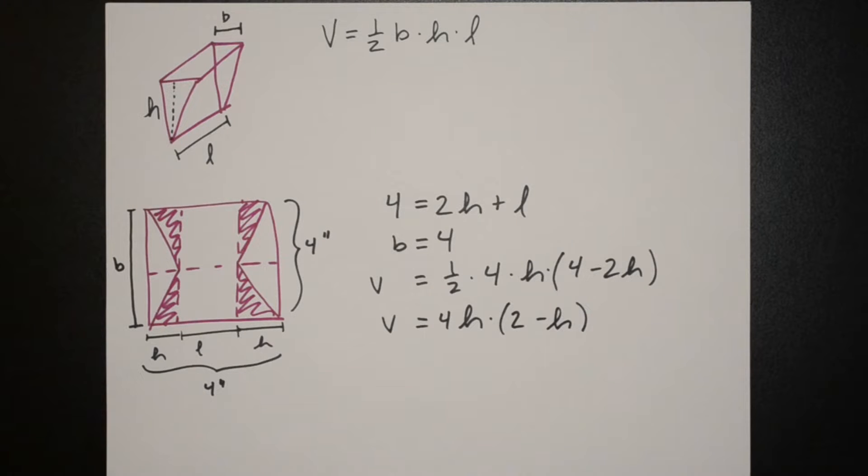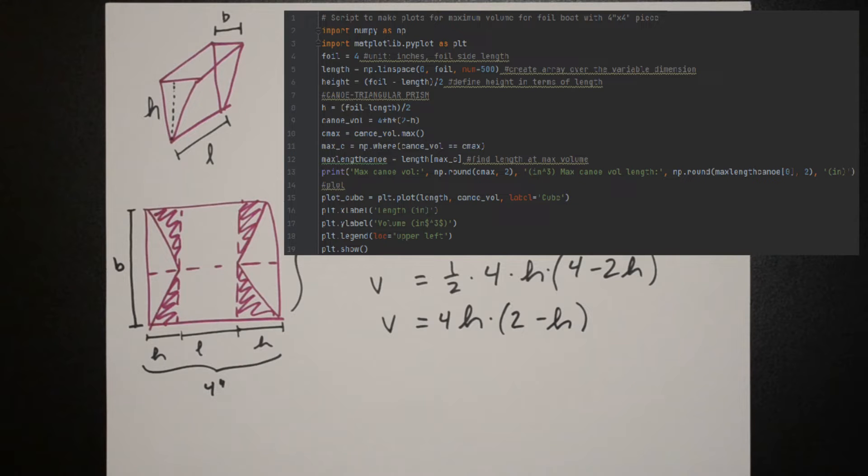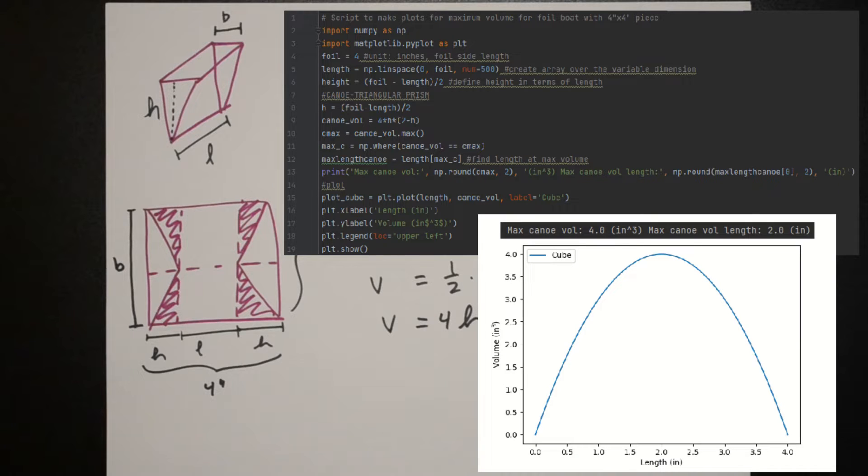Now we want to plot this so to do that I wrote up a little bit of Python code and you can see here that when I run the code I get a plot and I also have it output the values for the maximum volume which is 4 inches cubed and then the length where we get that which is 2 inches. You can see that these results match with the plot and so this is our approximate solution.